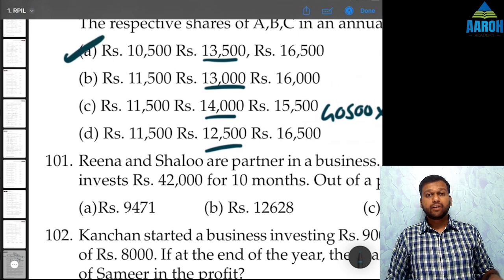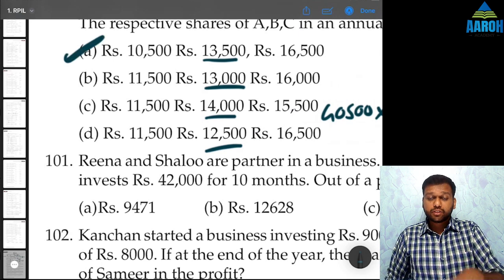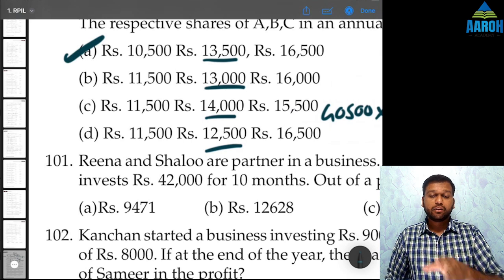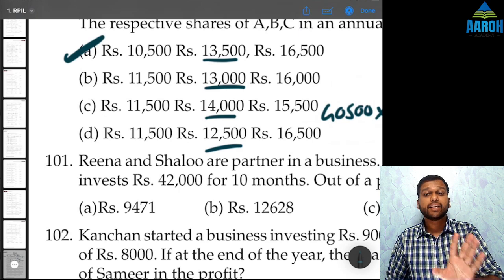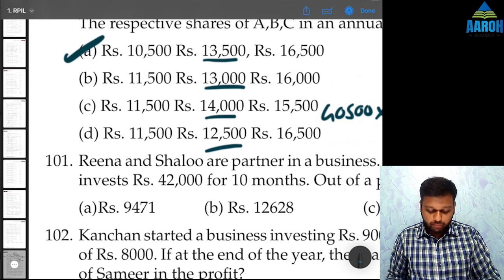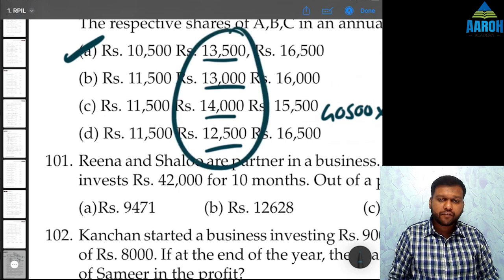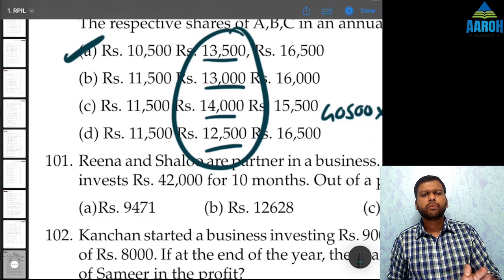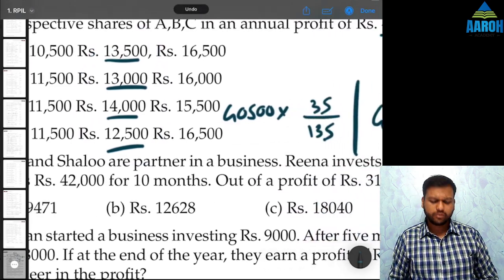I explained everything which is why this took nearly a minute, but if you solve it yourself it will take 5 to 6 seconds — because once you observe that B's value is different in all options, you just calculate B's share and ignore everything else.